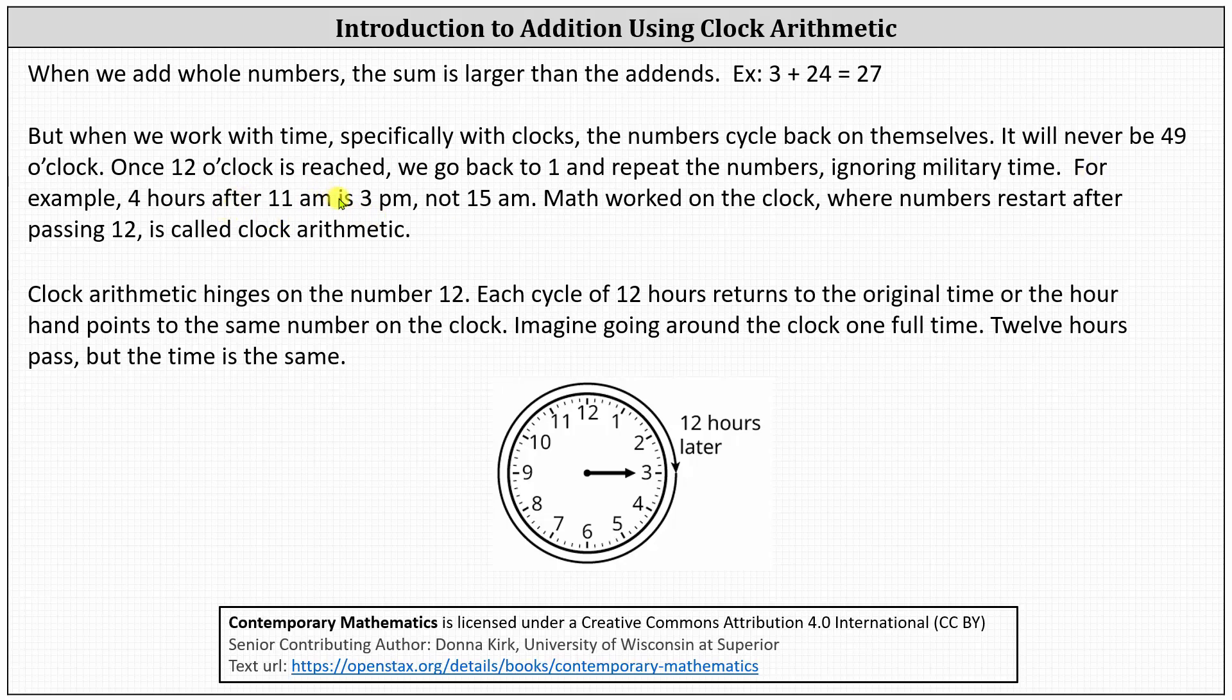For example, 4 hours after 11 a.m. is 3 p.m., not 15 a.m. Looking at the clock below, at 11 a.m., the hour hand would point to the 11. Four hours later, we count 4 hours clockwise from 11: 1, 2, 3, 4, and it is 3 p.m., not 15 a.m.